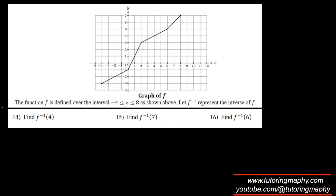Using the graph of f: f⁻¹(4) means find where y = 4, and the corresponding x = 4, so f⁻¹(4) = 4. f⁻¹(7) means find y = 7, and the corresponding x = 8, so f⁻¹(7) = 8. f⁻¹(6) means find y = 6, and the corresponding x = 7, so f⁻¹(6) = 7.